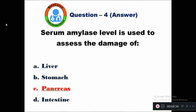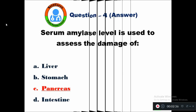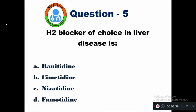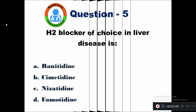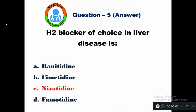Question 5: H2 blocker of choice in liver disease is — option A ranitidine, B cimetidine, C nizatidine, D famotidine. The right answer is nizatidine is the H2 blocker of choice in liver disease.